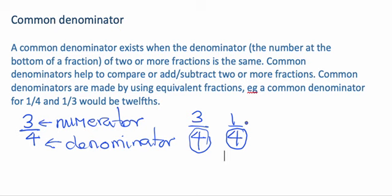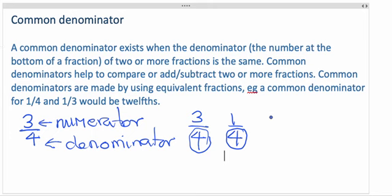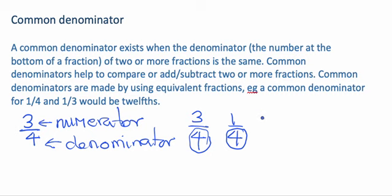But you don't always have fractions with the same denominator. You can have three quarters, but this time you might have a half. So these are two fractions. And it's difficult to do calculations between fractions if the denominator is different. So we need to have a common denominator.